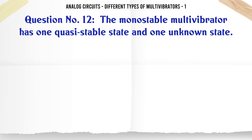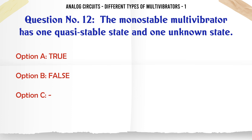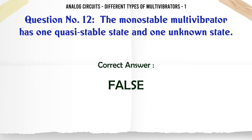The monostable multivibrator has one quasi-stable state and one unknown state. A: True. B: False. The correct answer is false.